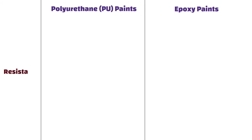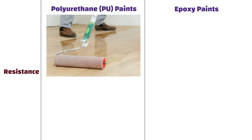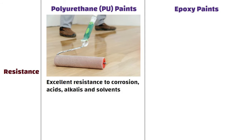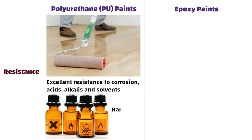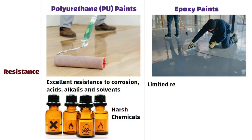Resistance. Polyurethane systems offer excellent resistance to corrosion, acids, alkalis and solvents, making them ideal for environments with harsh chemicals. On the other hand, epoxy resins offer limited resistance to organic acids found in food and drink produce.